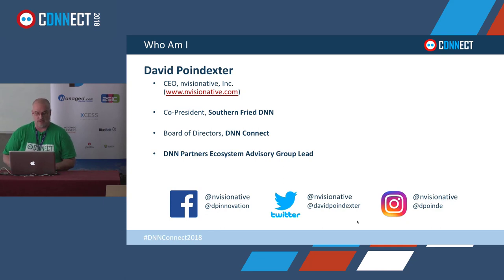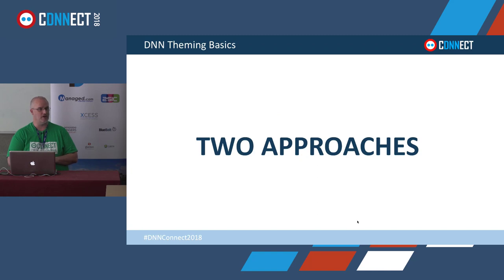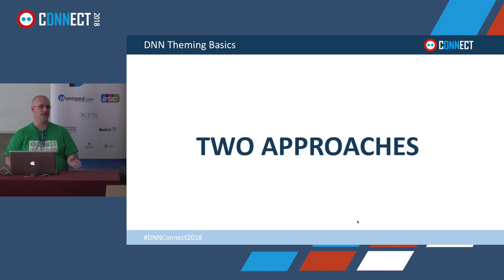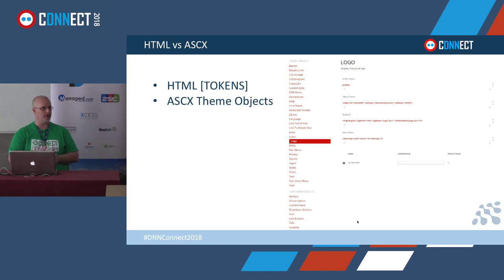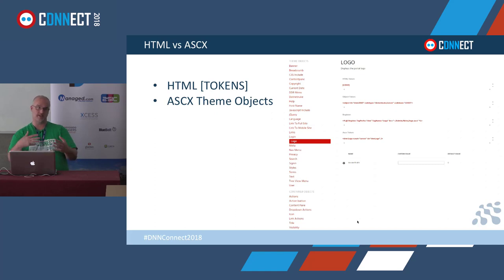Let's start with the basics because we are going to be doing a paradigm shift in theme development from maybe what you're accustomed to doing. There are two basic approaches currently in DNN for theming. We're going to utilize those but use more advanced tooling to make our workflow more efficient and do things in a high-performance and optimized way. The first approach is HTML, which is token-based - pure HTML with bracketed tokens that DNN translates into ASP.NET user controls.